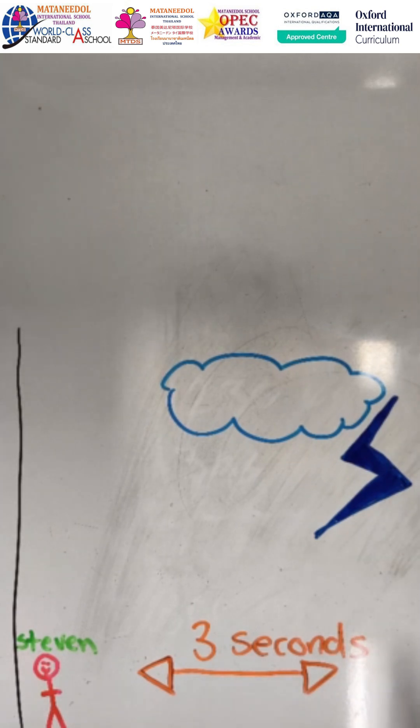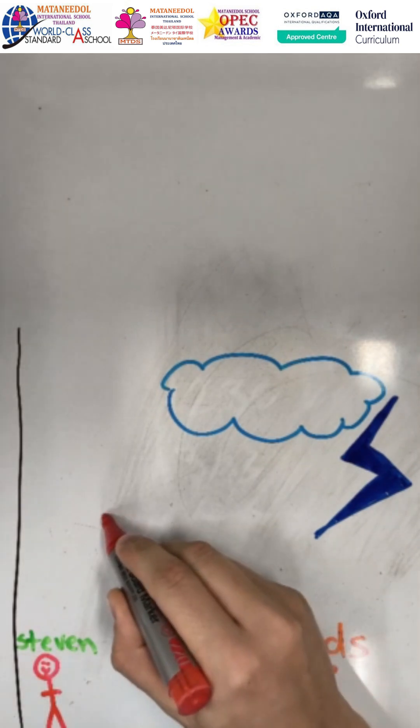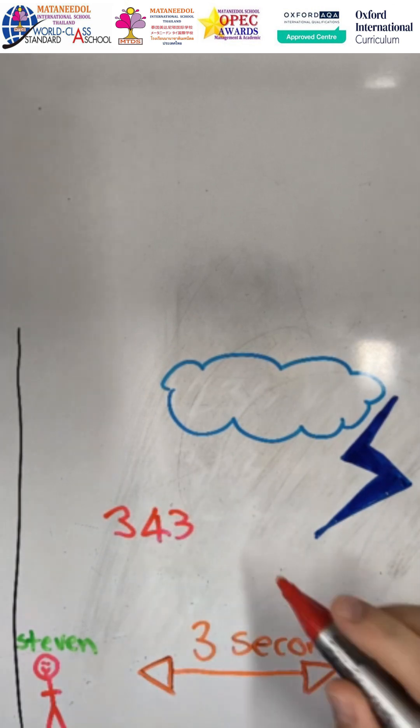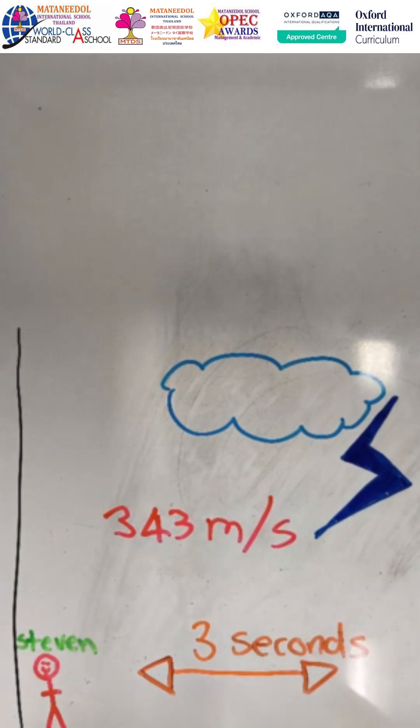So let's see here. When Peter sees the lightning strike, it takes about three seconds before he can hear the thunderclap. So let's see if we can figure out how far away Stephen is from this lightning strike. So we know that sound travels at 343 meters per second.